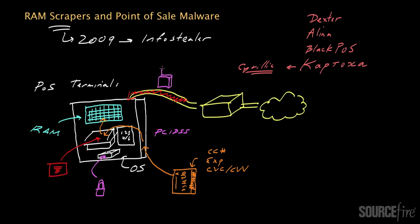However, the sensitive data has to be processed at some point, and while it's being processed it can't be encrypted — by definition. So there's a moment in time when the data resides in the POS terminal's RAM in an unencrypted, clear-text format. RAM scrapers, as the name implies, attempt to steal sensitive data at precisely this moment in time.